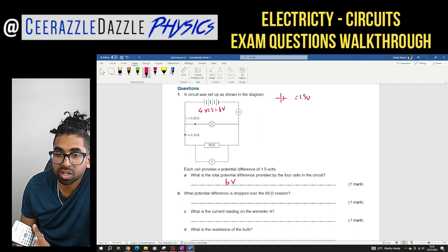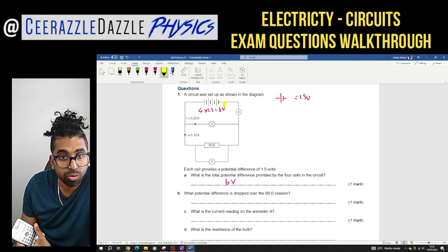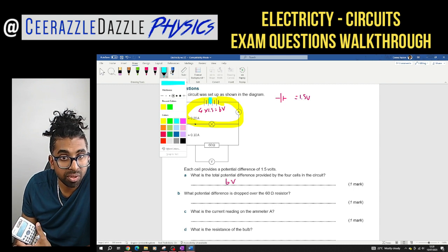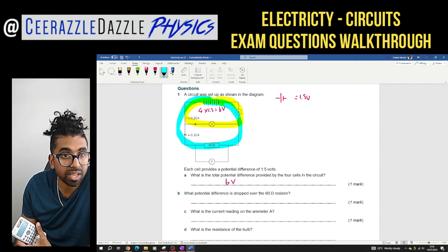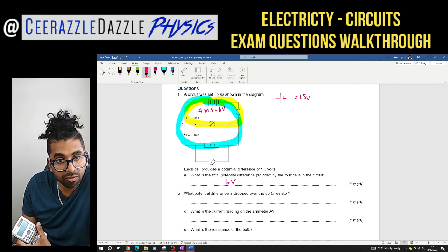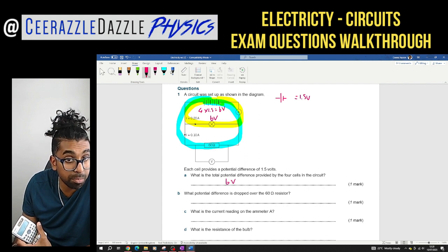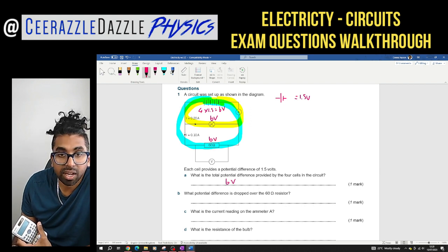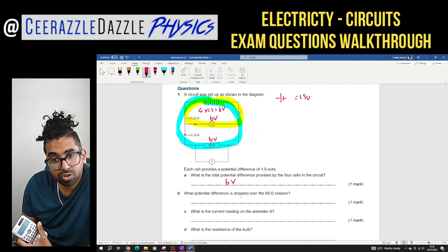Next question. What potential difference is dropped over the 60 ohm resistor? The 60 ohm resistor here. Don't forget the voltage rule. In each loop, so this is one loop, the voltage is conserved, it is the same. So this is one loop and this is my other loop all the way back around again. So look, in the first one 6 volts come in. I've got one place to drop off. This one must be 6 volts here and it goes back. Second loop I pick up 6 volts and I come across here. This one will be 6 volts as well. Loads of kids usually think that's three and three. No, it's 6 volts and 6 volts here. So the potential difference dropped across the 60 ohm resistor is going to be 6 volts.